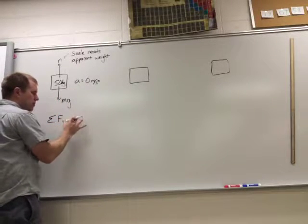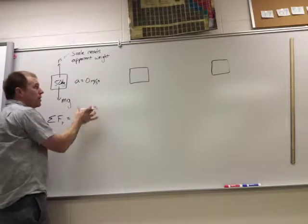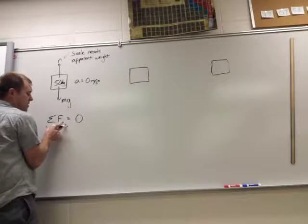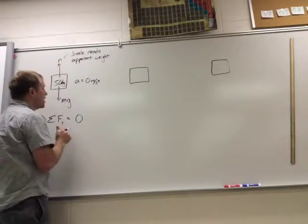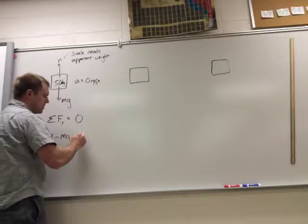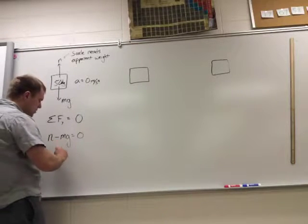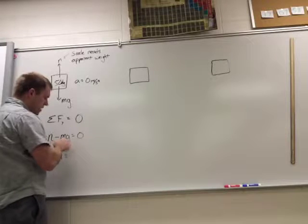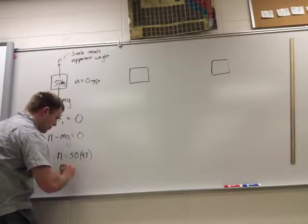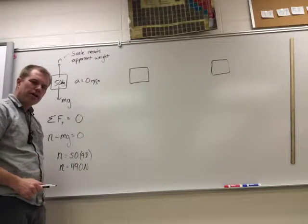We set up a free body diagram. We're going to sum up the forces in the y direction. Is it going to equal ma or zero? Well, the acceleration is zero, so m times zero is zero. I now get to sum up those forces in my y direction. So I have normal force pointing up, minus mg pointing down. Because mg is in the negative direction, I have a minus sign there when I add it up. So my normal force is equal to mg, which is 50 times 9.8. And so my normal force is 490 newtons. So my scale reads 490 newtons.